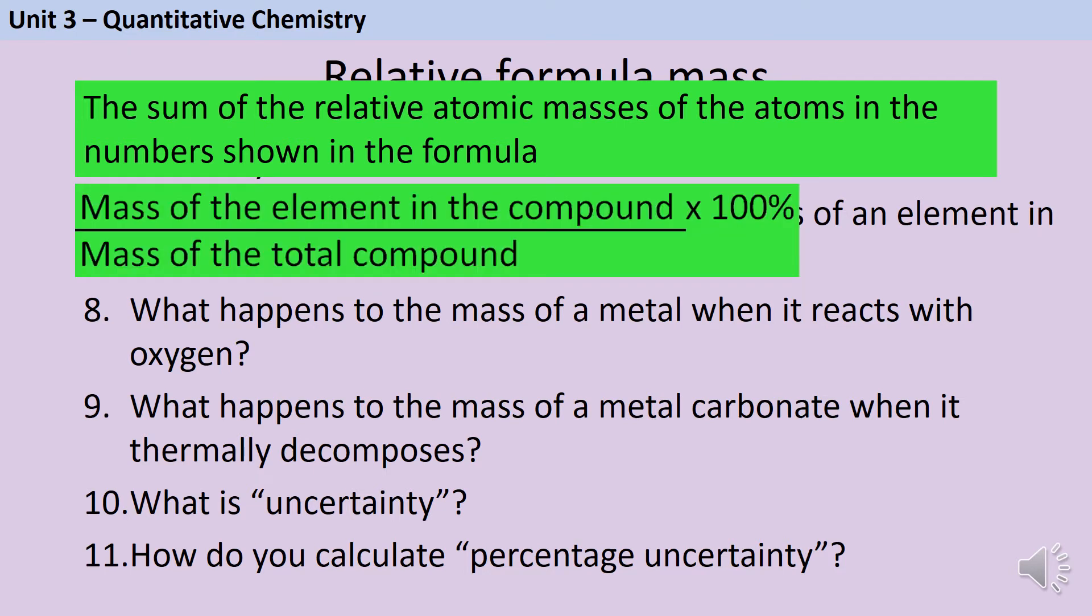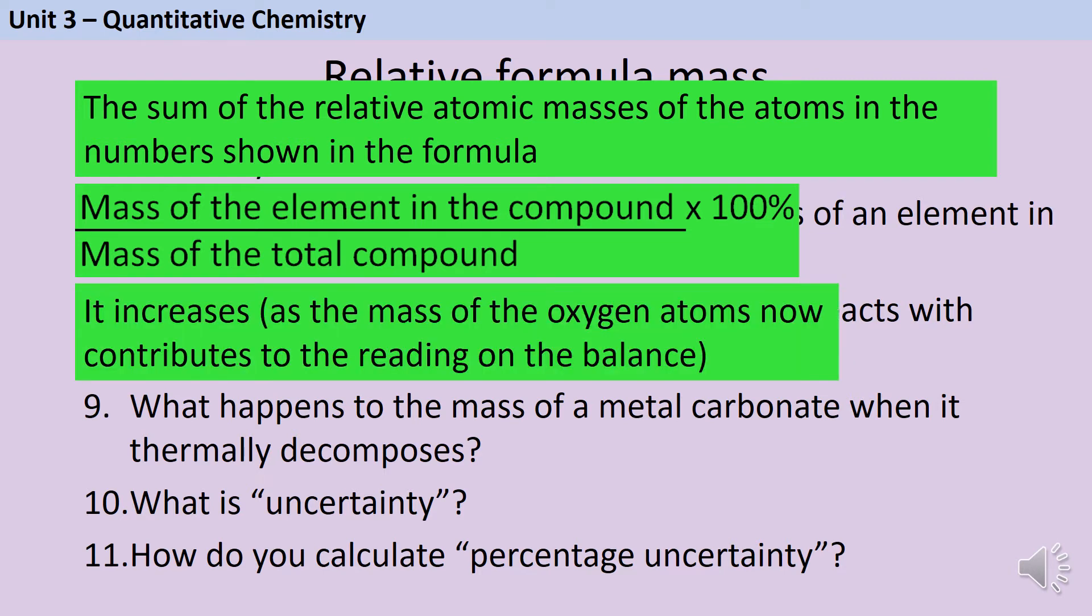When you have a reaction that has a gas as a reactant or a product, the reaction may appear to change mass, even though we know it really doesn't. So for instance, when a metal burns in oxygen, the reading on the balance will increase. And the reason for this is that the mass of the oxygen atoms, which already had a mass but they were floating around in the atmosphere before, is now contributing to the reading on the balance.